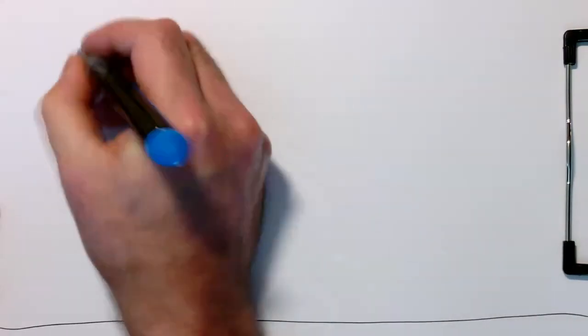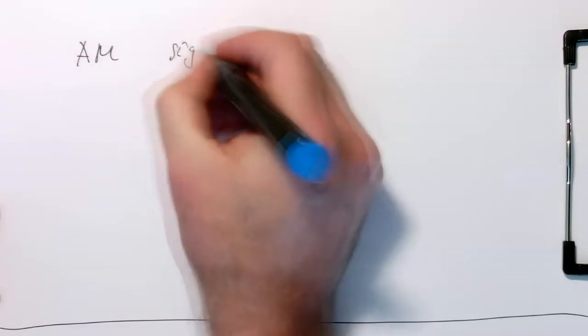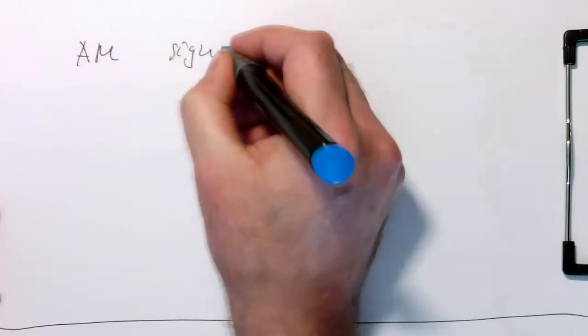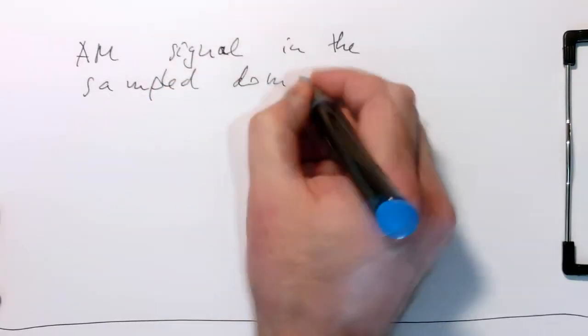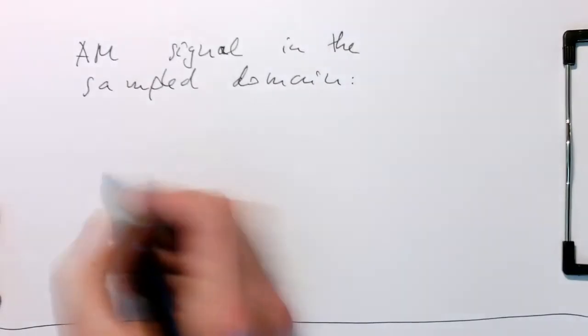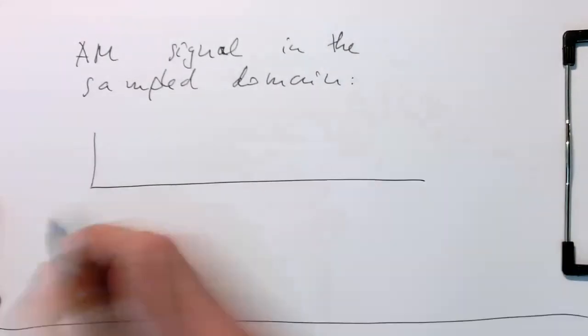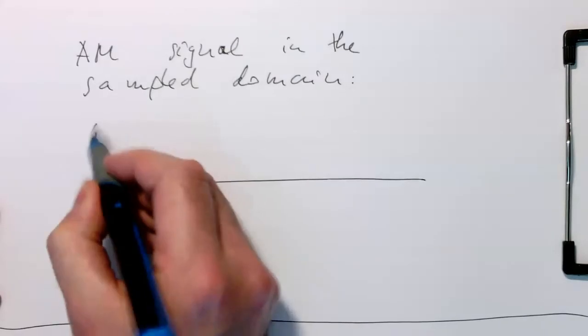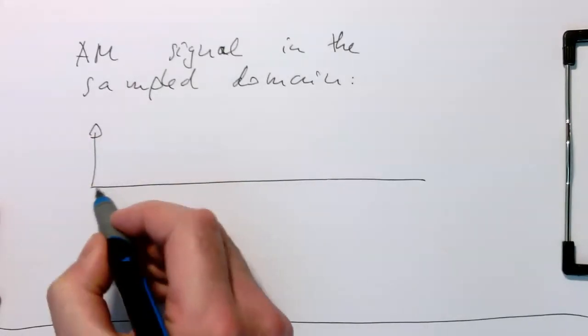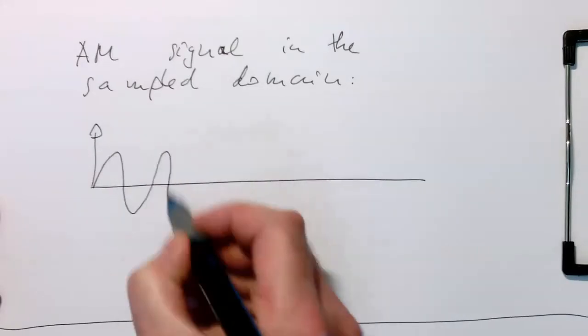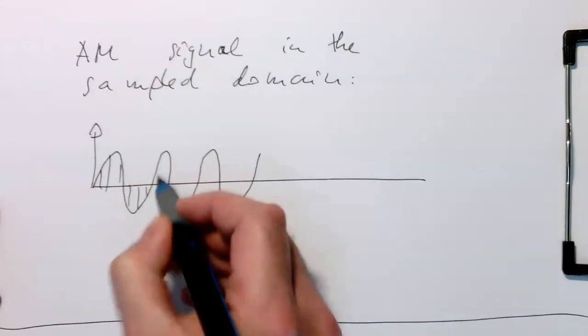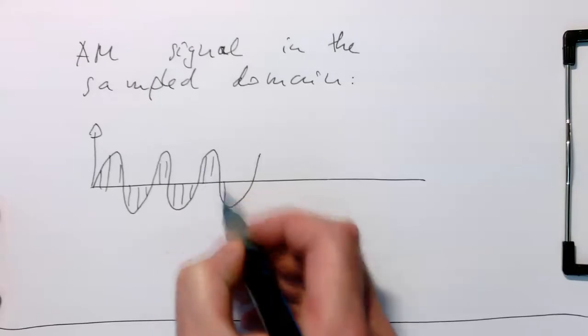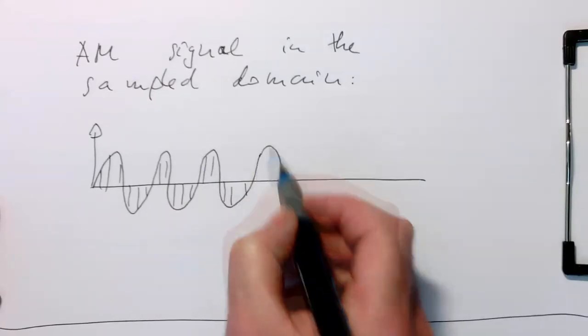The AM signal in the sampled domain means we have our symbols with high amplitude and low amplitude. Remember, this is a sampled signal. So I should draw this with discrete samples.